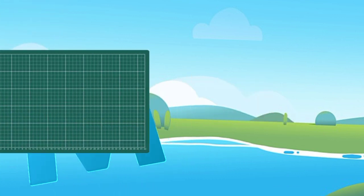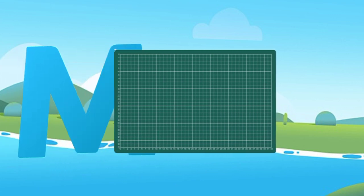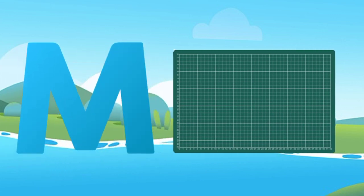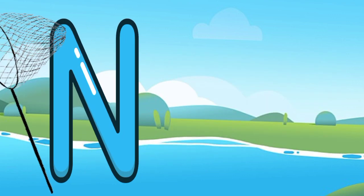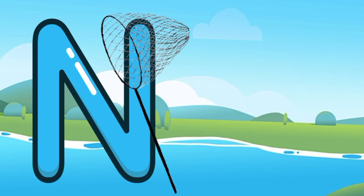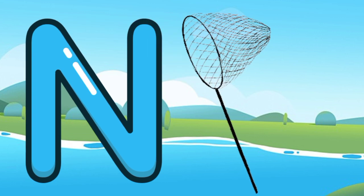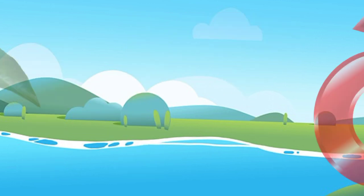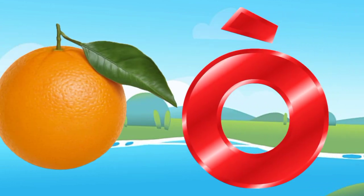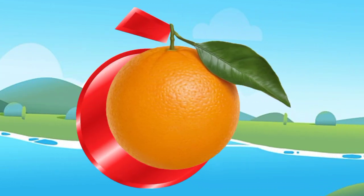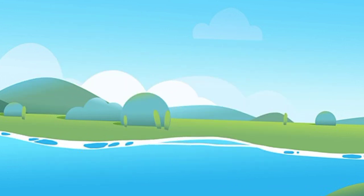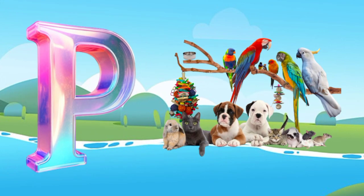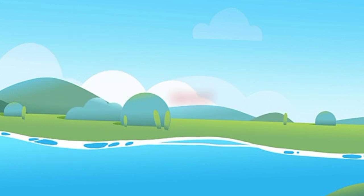M is for mat, m-m-mat. N is for net, n-n-net. O is for orange, o-o-orange. P is for pet, p-p-pet.